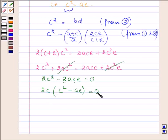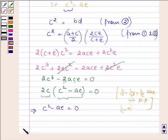Now if the product of two numbers is equal to 0, then either one of them is 0. So this implies either 2C is equal to 0 or C squared minus AE is equal to 0. But C cannot be 0 since we are given that 1 upon C, 1 upon D, and 1 upon E are in AP. If C equals 0, then 1 upon C equals infinity. Thus 2C cannot equal 0, and this further implies that C squared minus AE is equal to 0, or C squared is equal to AE.